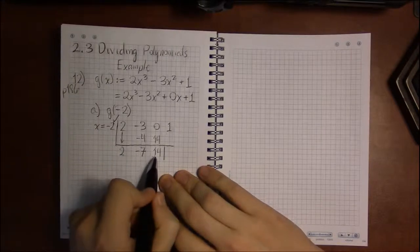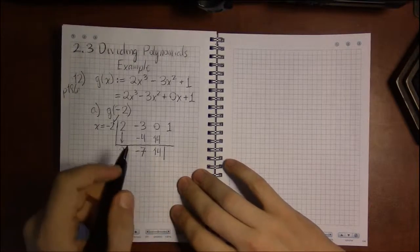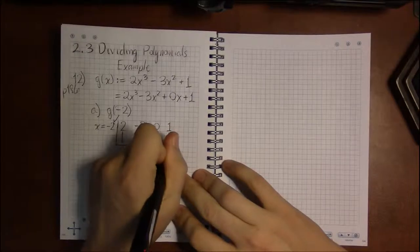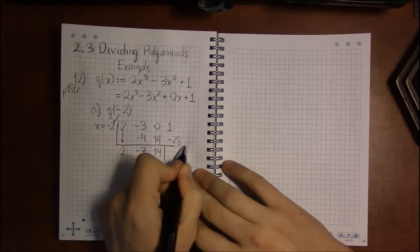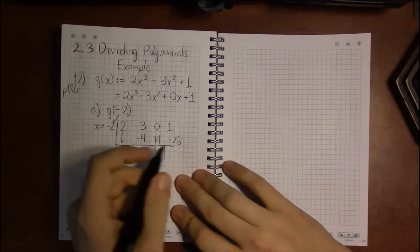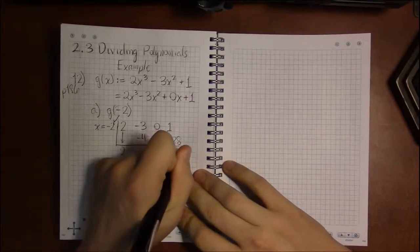Multiply minus 2 times 14 to get minus 28, and then add minus 28 plus 1 to get minus 27.